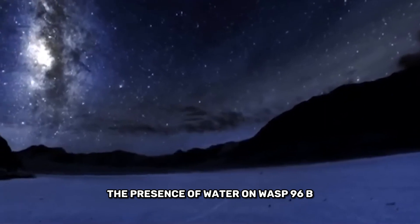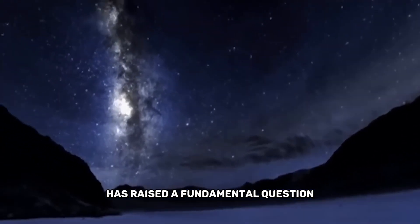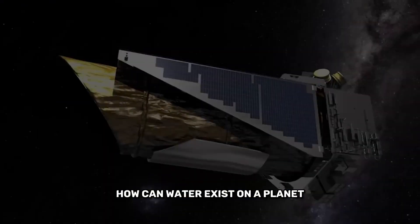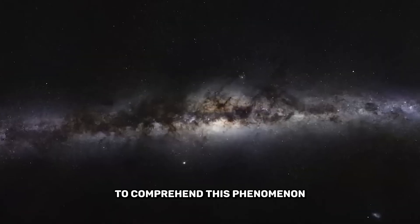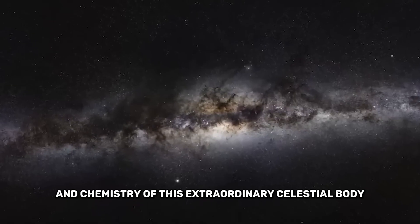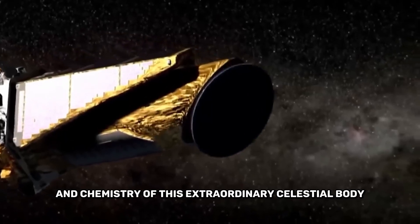The presence of water on WASP-96b has raised a fundamental question. How can water exist on a planet that's searingly hot? To comprehend this phenomenon we must explore the history and chemistry of this extraordinary celestial body.